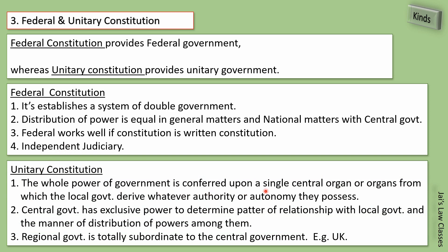In unitary constitution, the whole power of the government is conferred upon a single central organ, from which local governments derive whatever authority or autonomy they possess. The main important feature of a unitary constitution is a single government, and local and other authorities function accordingly. The central government has exclusive power to determine the pattern of relationship with local government and the manner of distribution of powers. The example is the United Kingdom.